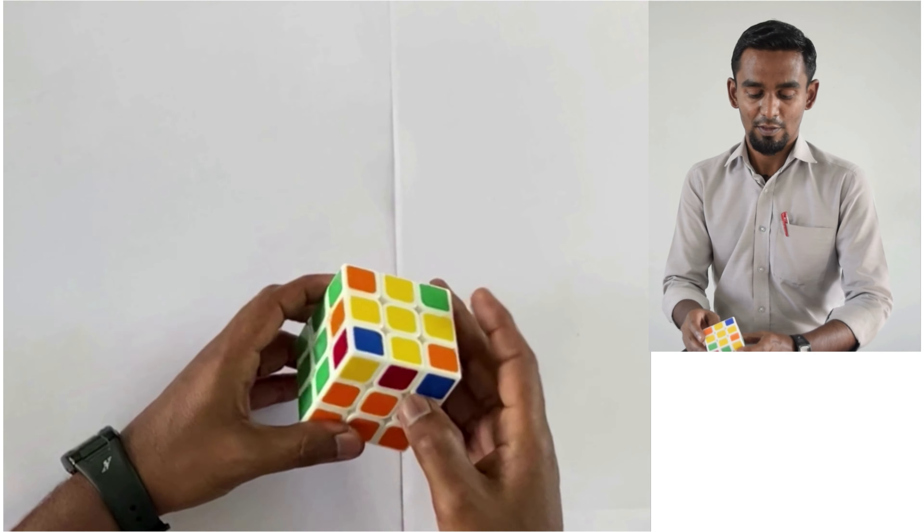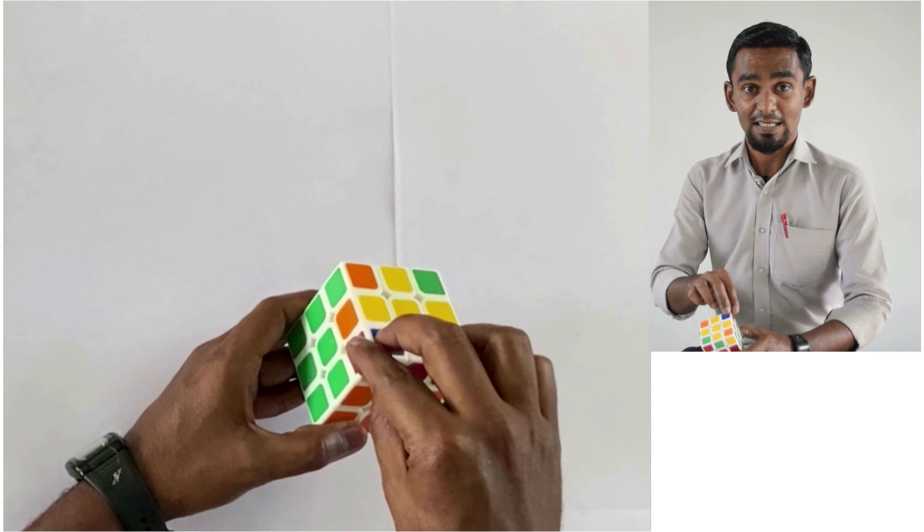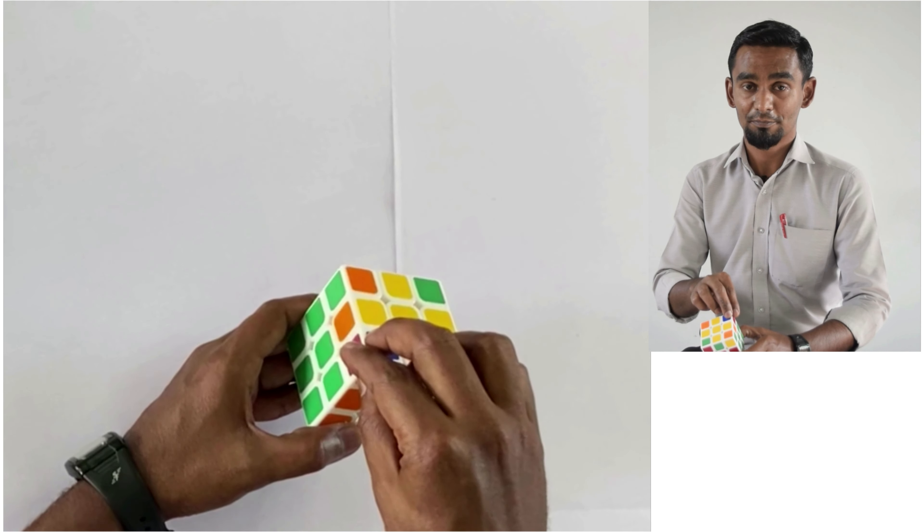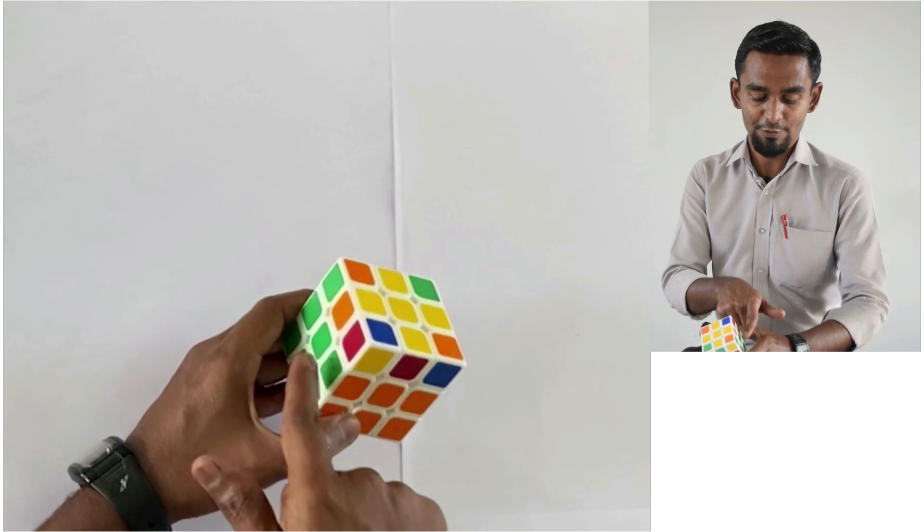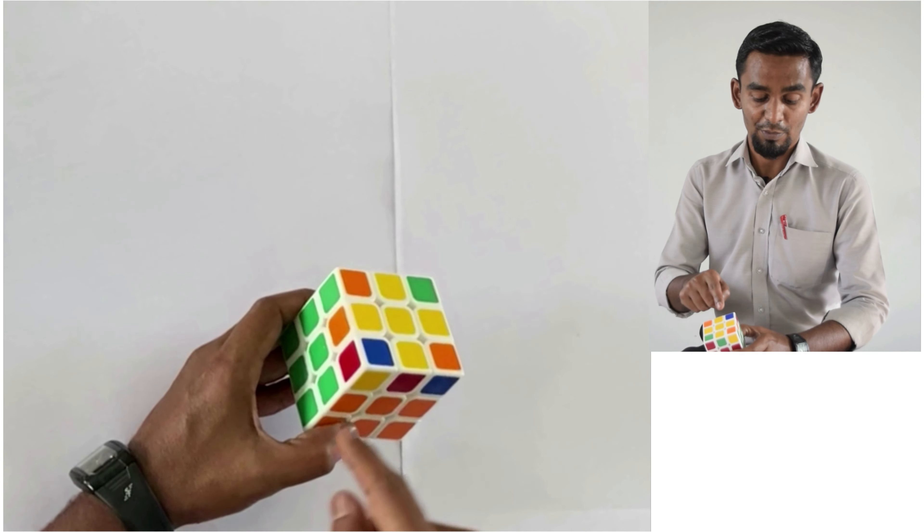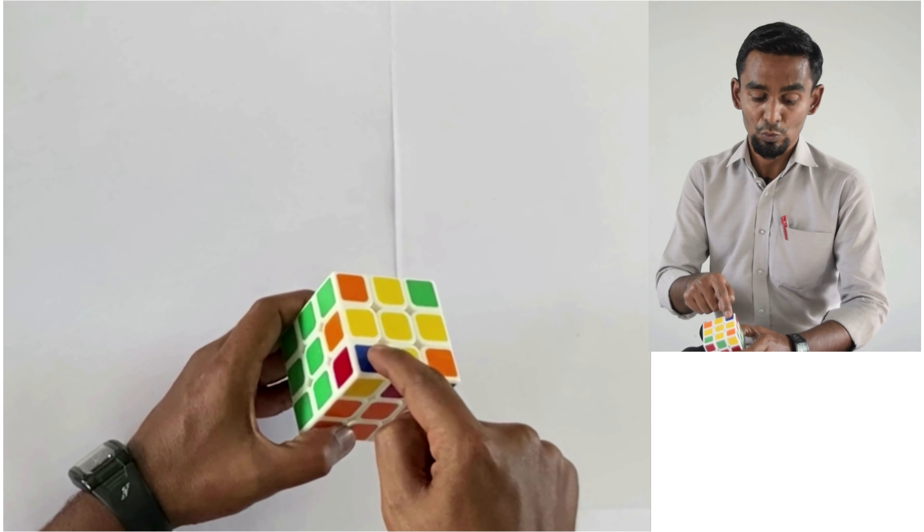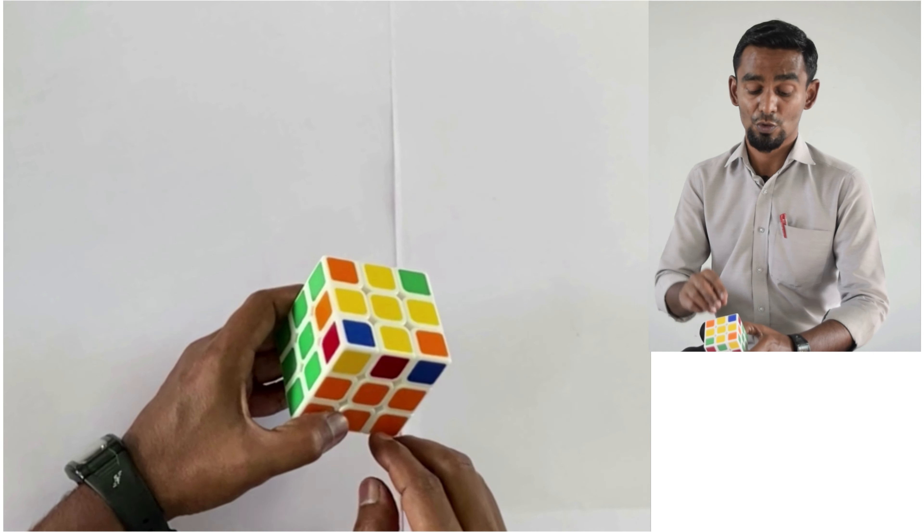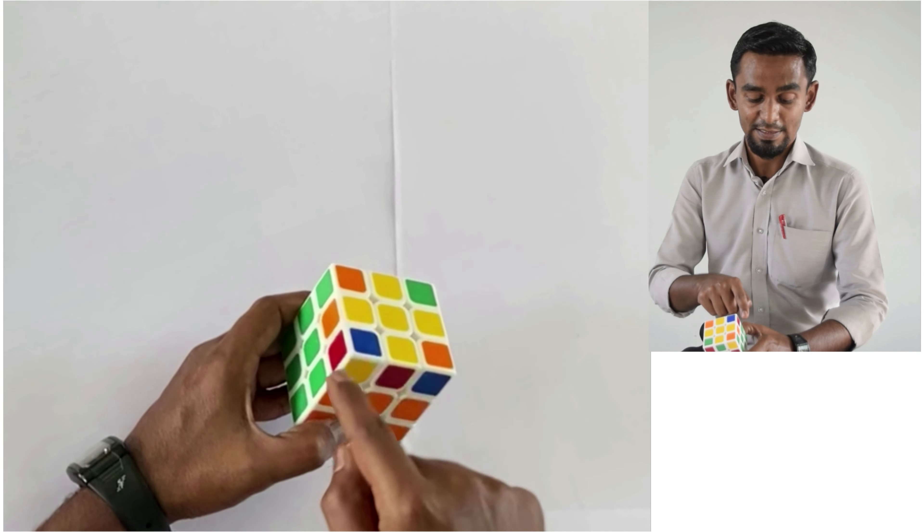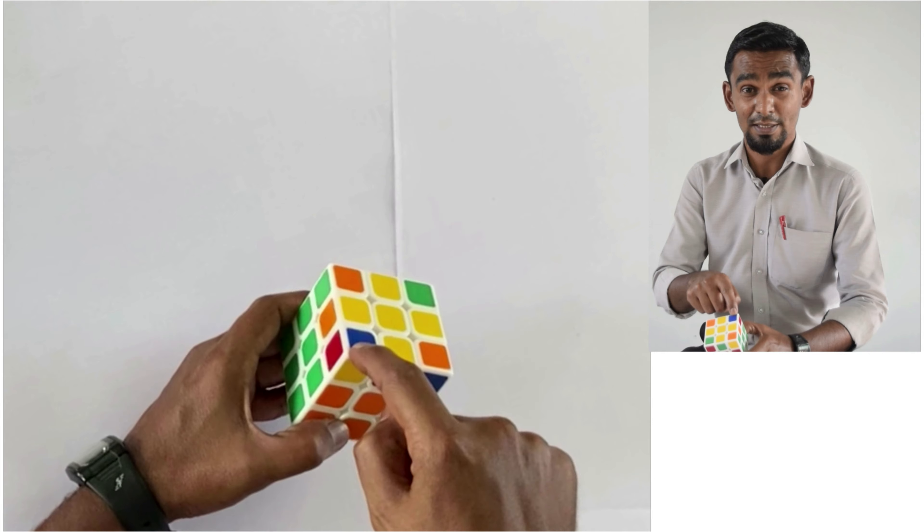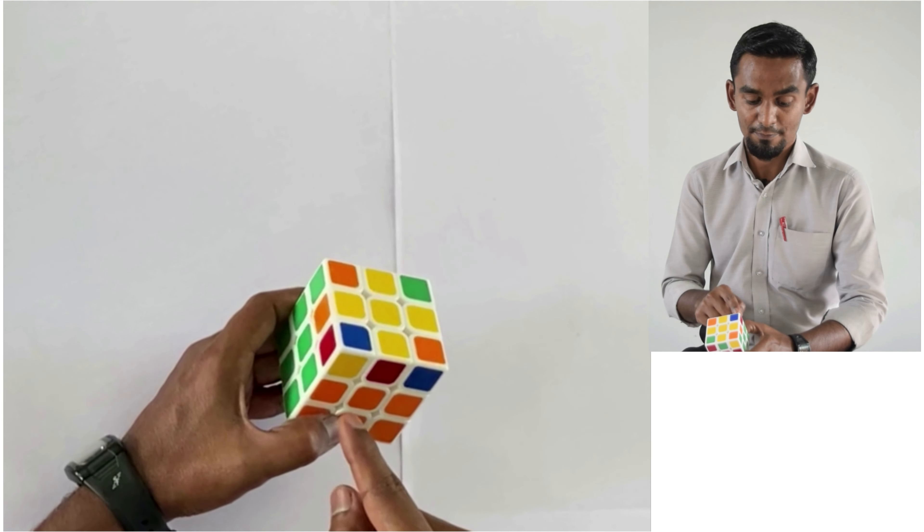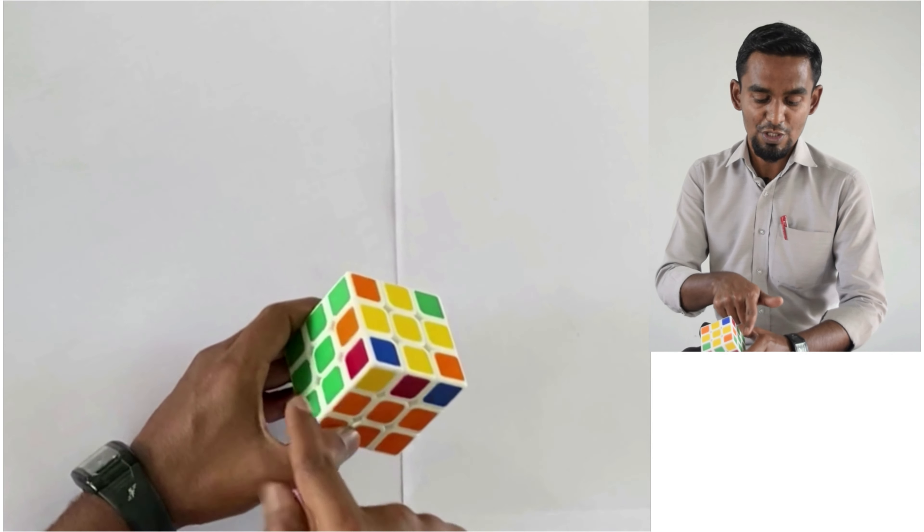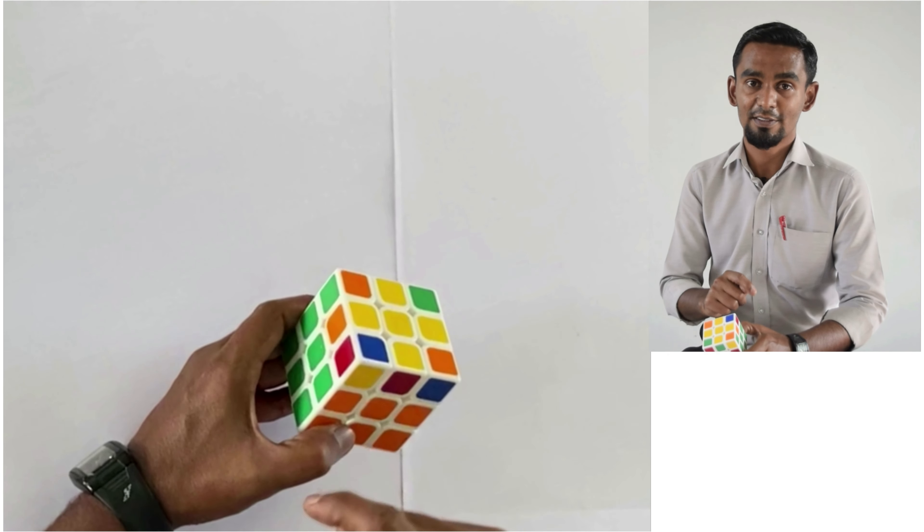Okay, if you look at the left corner cell, the front face is orange and the left face is green, but you see here it has blue and red. So in this corner position, we need to bring a corner cell that has orange and green, apart from the yellow.